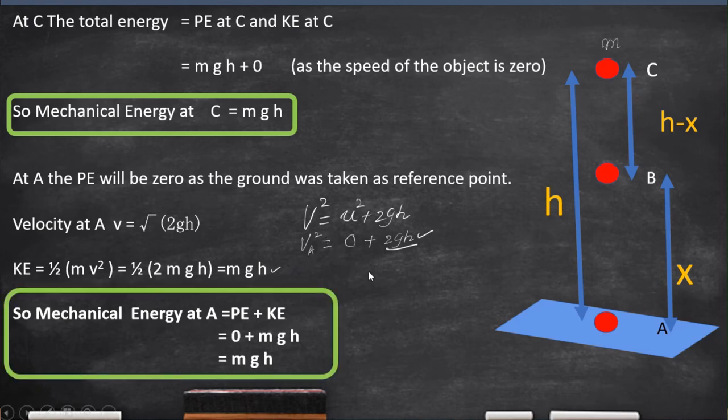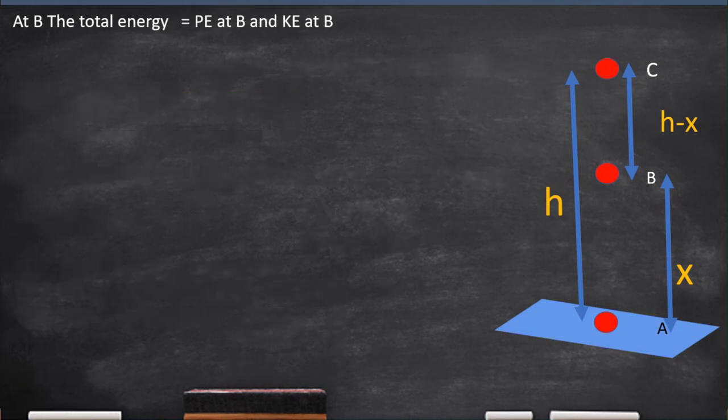Now, we have to prove the same result, that is, the mechanical energy at B also Mgh. At B, the potential energy, because it is situated X units away from the ground, it will have potential energy. And, as it is released from C, it is having certain velocity at B. Therefore, it will have kinetic energy also.